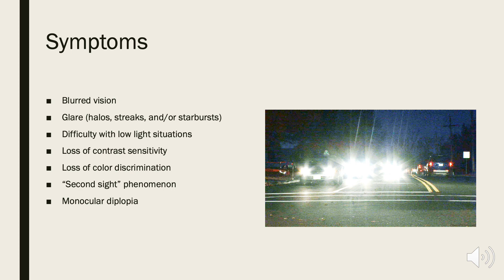Cataracts result in loss of the lens's optical quality, which produces many visual symptoms, including blurry vision, glare such as halos, streaks, and/or starbursts around lights, which often leads to difficulty seeing in bright lights, problems seen in low light situations resulting in poor night vision, an inability to distinguish contrast between objects and their background, loss of color discrimination, and the second sight phenomenon, which refers to a temporary improvement in distance vision in patients with hyperopia and near vision in patients with myopia. Patients can also complain of double vision in one eye, termed monocular diplopia.